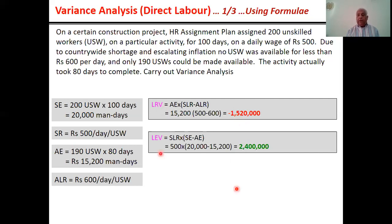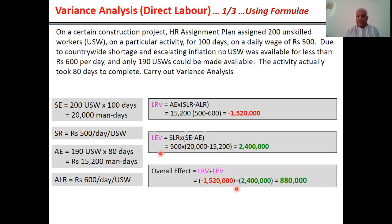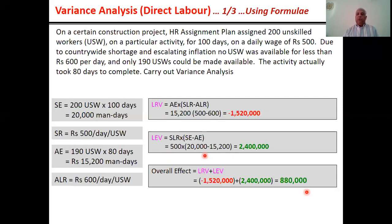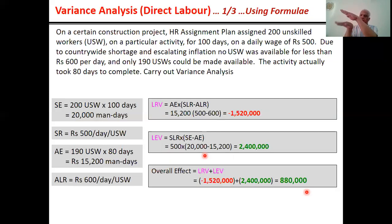Overall effect: sum of labor rate variance (negative 1.52 million) and labor efficiency variance (positive 2.4 million). Adding a negative to a positive effectively means subtraction, giving a net favorable variance of 880,000 rupees. This means the actual cost will be 880,000 rupees below the cost baseline — a saving of 880,000 rupees.